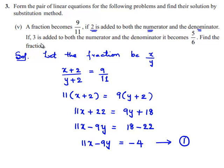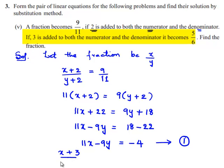The second case is when 3 is added to the numerator and the denominator, it becomes 5 by 6. So this becomes x plus 3 by y plus 3 is equal to 5 by 6.